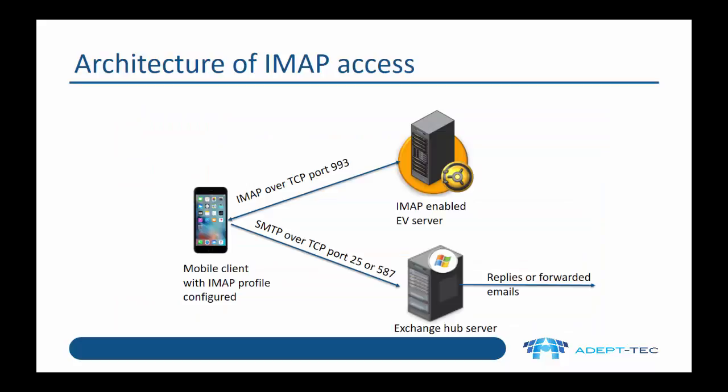If we look at the architecture of IMAP access, our mobile client with an IMAP profile configured will use the IMAP protocol over TCP port 993 — that's the SSL port for IMAP — and it will connect to an IMAP-enabled EV server. In order to reply or forward existing archived emails, the user needs SMTP access over TCP port 25 or 587 to an Exchange hub server, where the emails can be relayed.